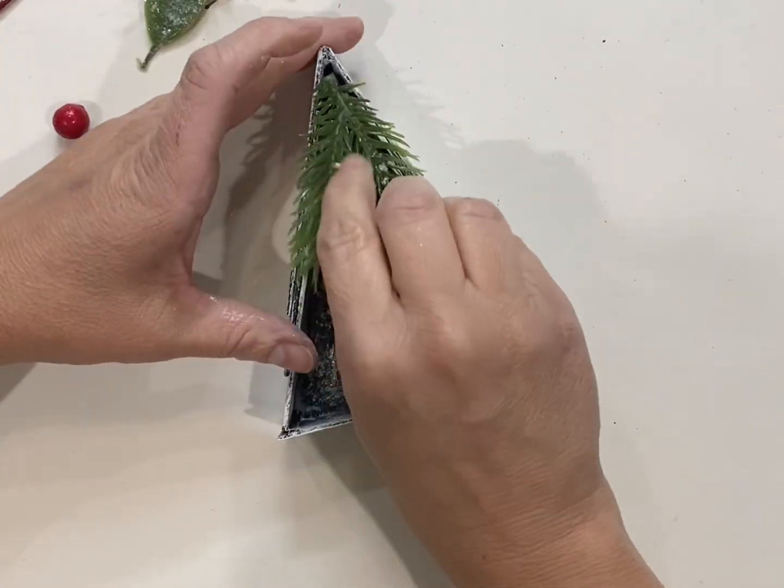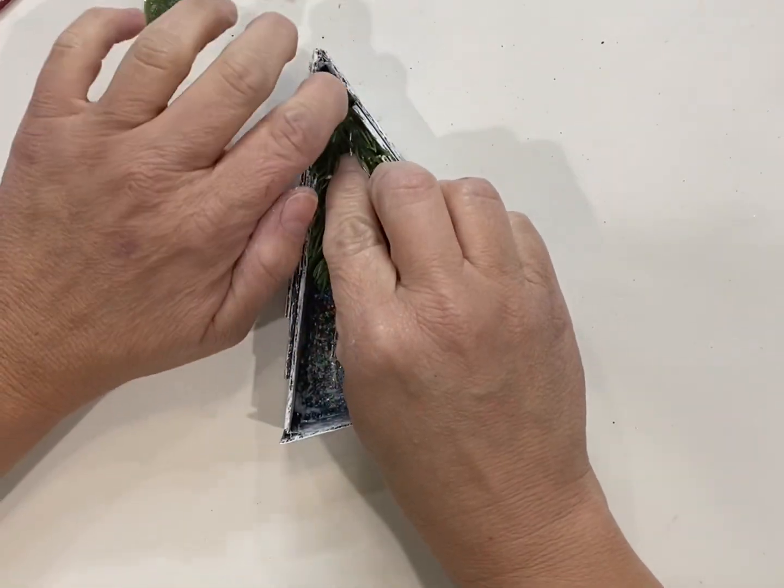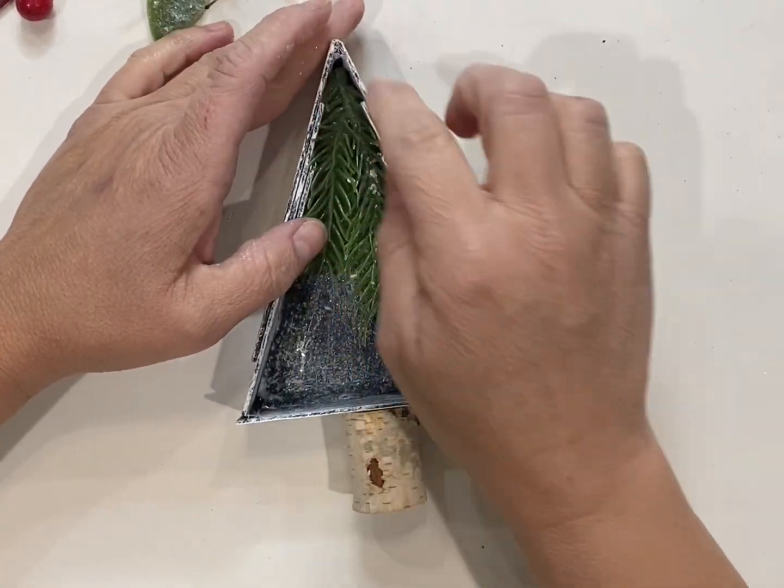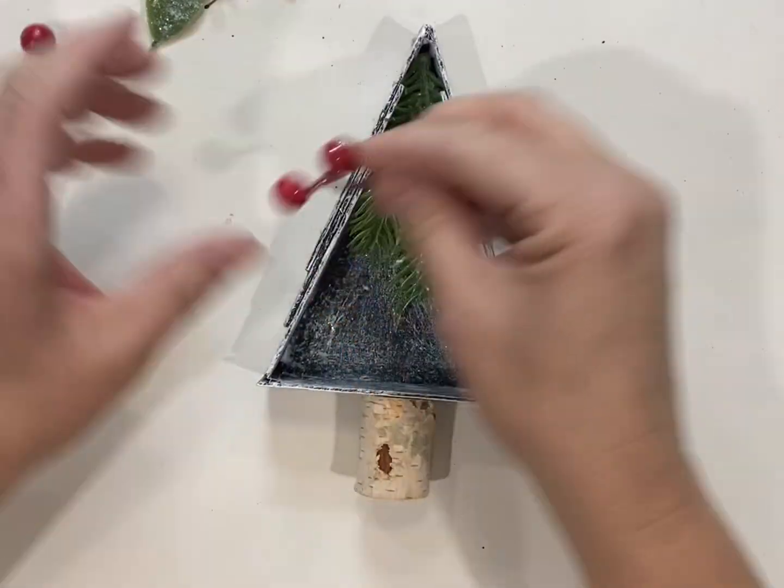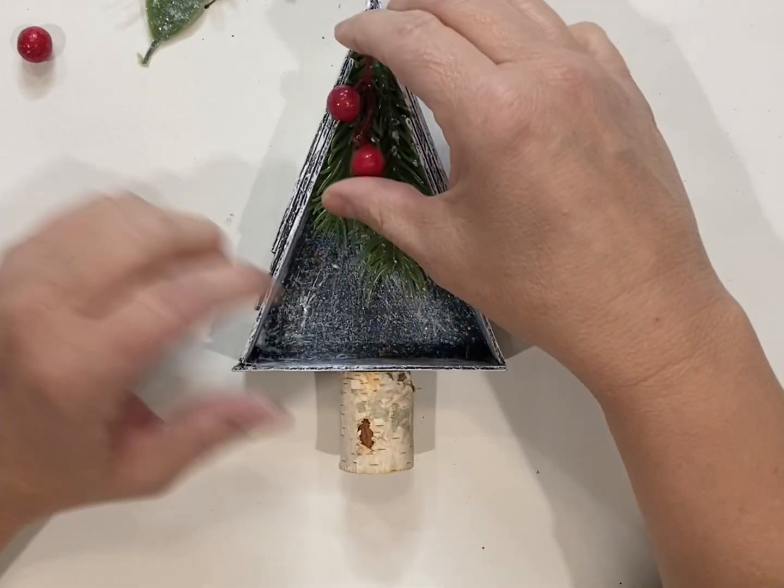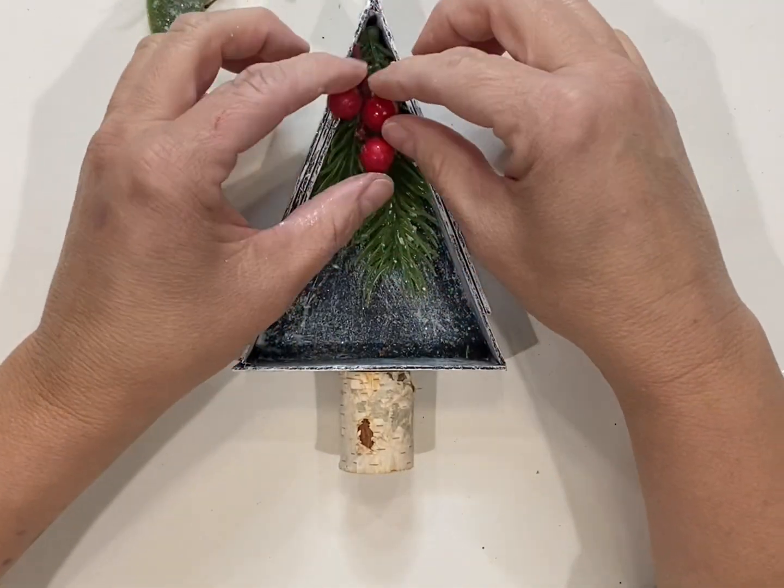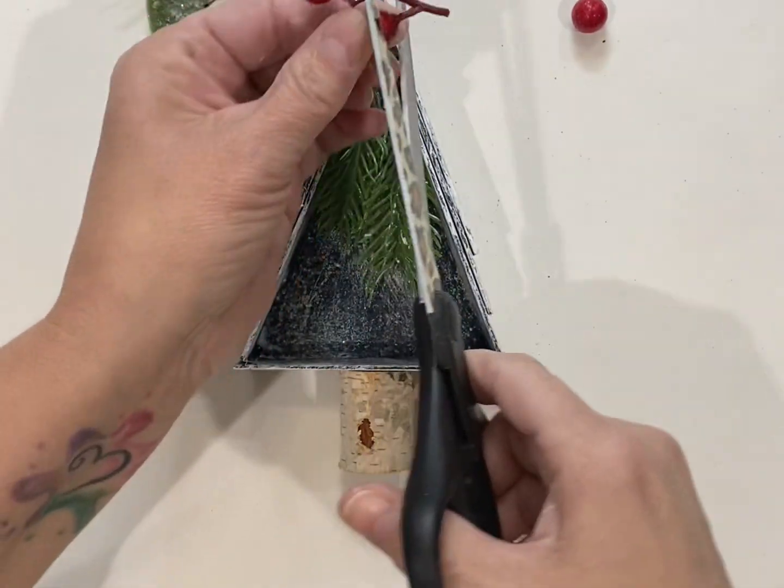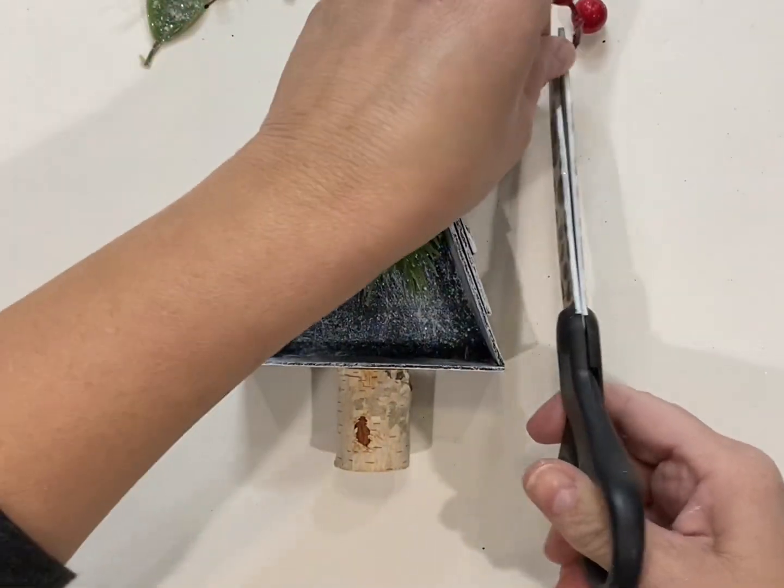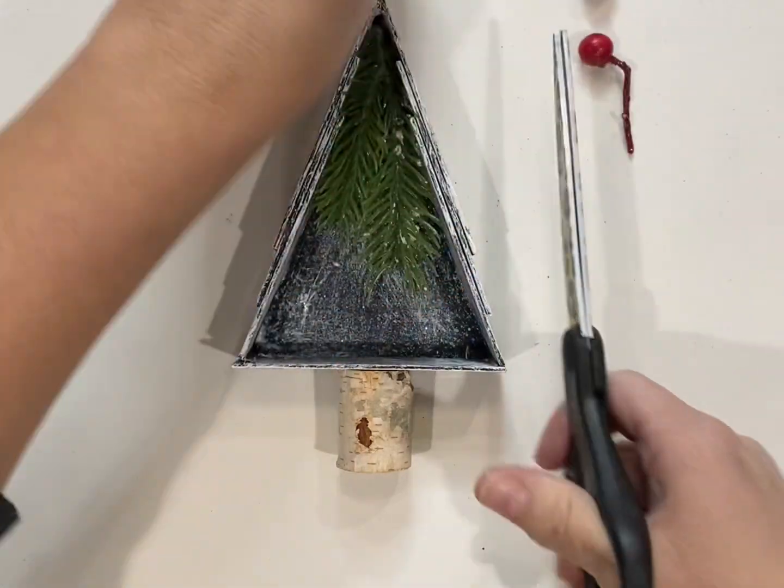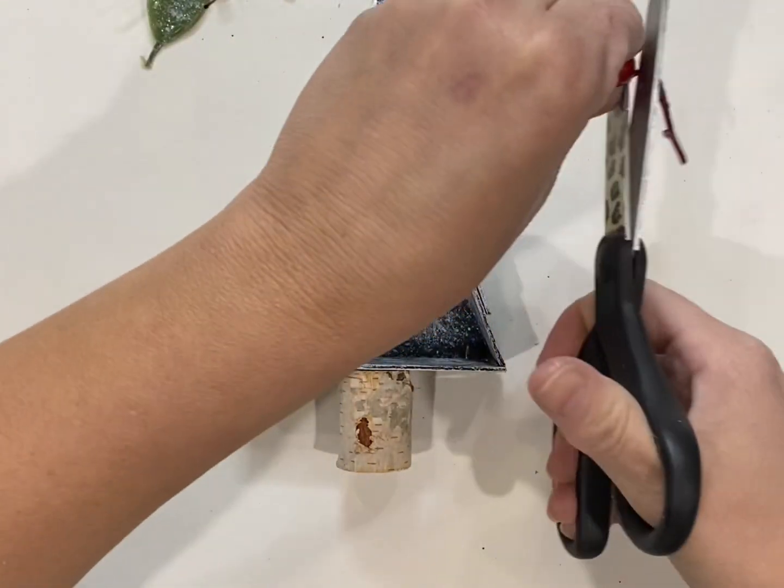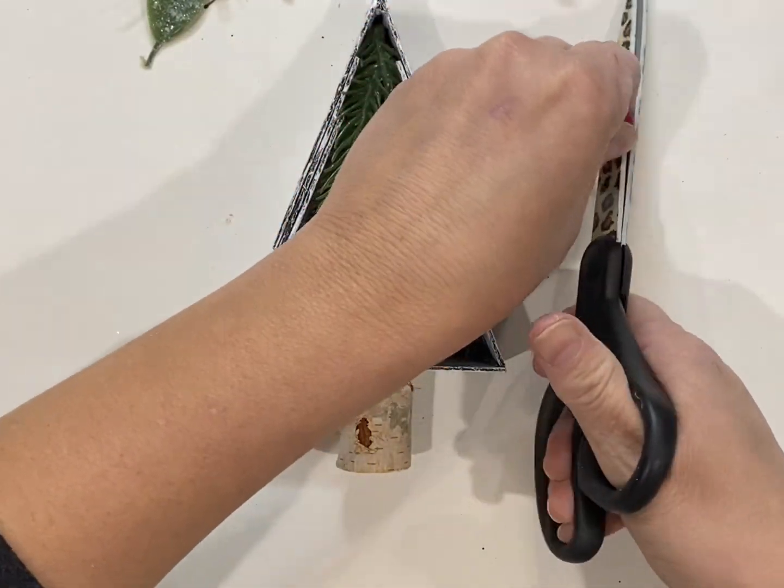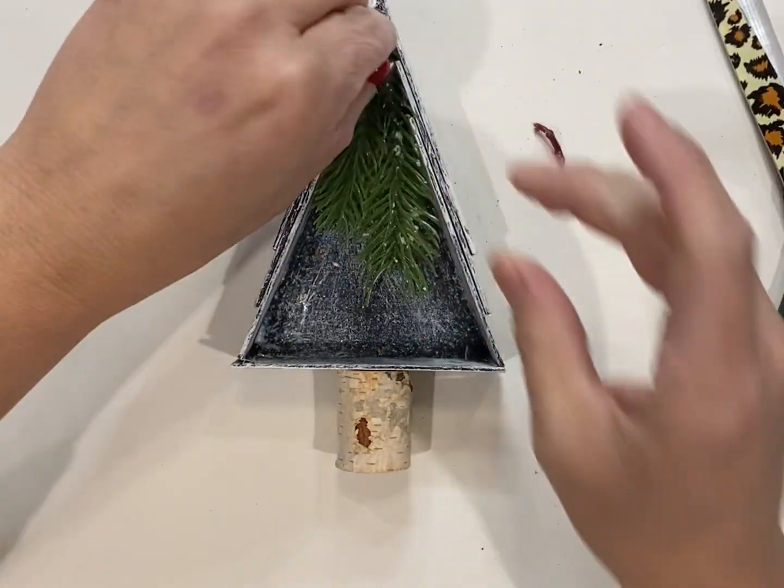Just use little things that you have laying around your craft room and hot glue that in there. Then I'm gonna take my berries and trim those off. I save all the little bits and pieces of things when I don't use them in a project. I save all those little bits and things because you never know when you might need it for something small like this. I'm just snipping my berries off and now I'm gonna glue them on to the greenery.